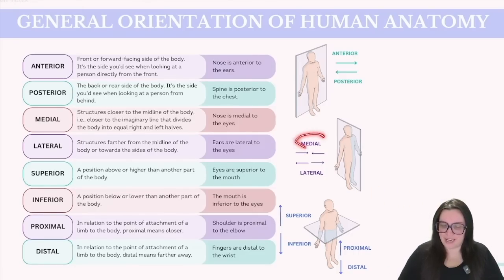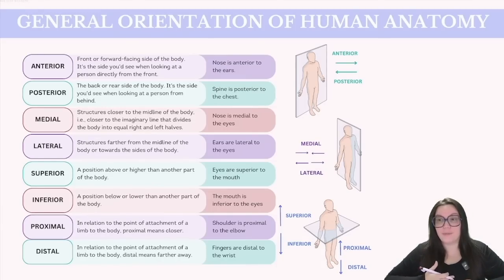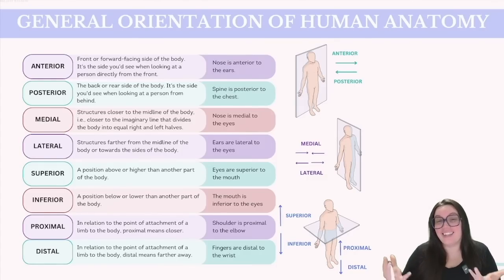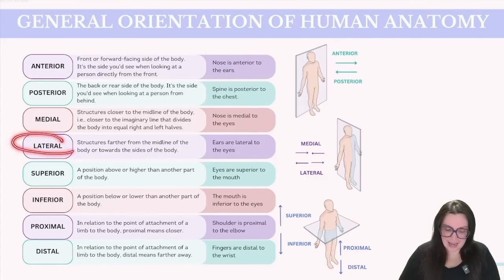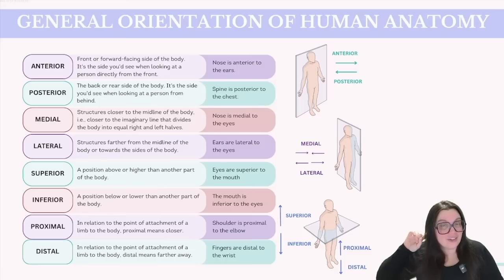Medial means structures that are closer to the midline of our body, like our sternum bone. So we could say that the nose is more medial than our eyes. And the opposite of medial is lateral — lateral structures are further away from the midline of the body. So we could say that the ears are lateral to the eyes.